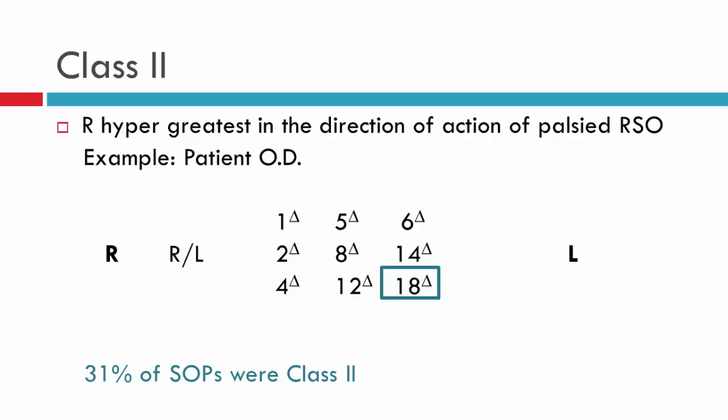In class two, the right hyperdeviation is greatest in the direction of action of the palsied right superior oblique — as we would expect on the basis of the principles of incomitance. The greatest right on left is in levo depression, where the action of the right superior oblique takes place. This actually is the most common superior oblique class.